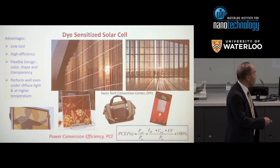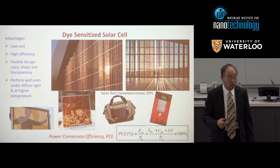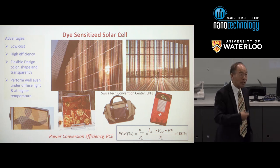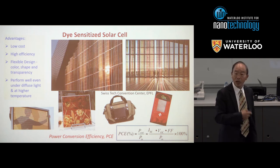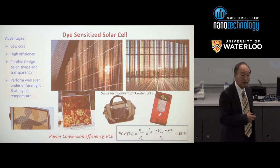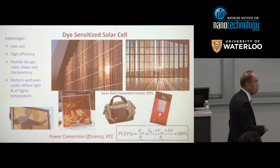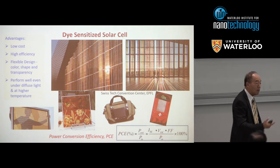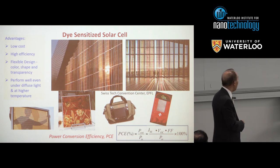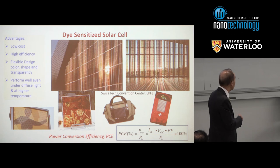One of the things to measure performance is power conversion efficiency — power output divided by power input. The power output depends on three things: the short-circuit current JSC, the open-circuit voltage VOC, and the fill factor. The fill factor measures recombination — you want it to be as large as possible, because if it's small, recombination of electrons with holes becomes important and reduces performance.